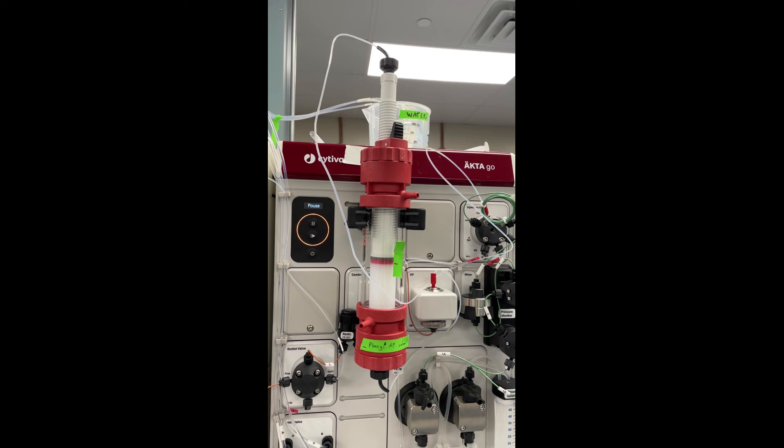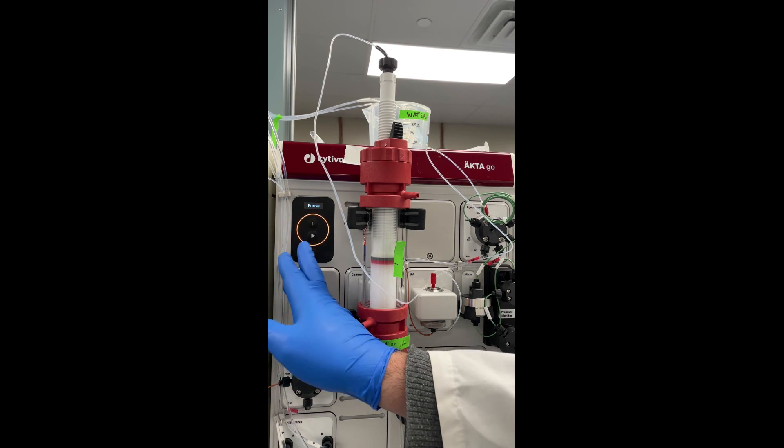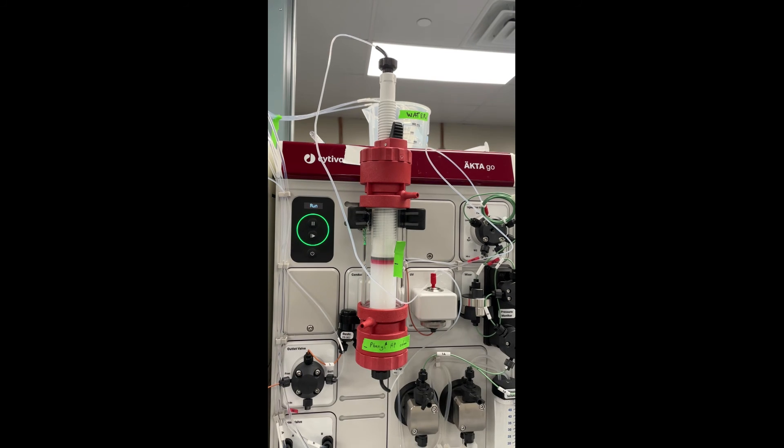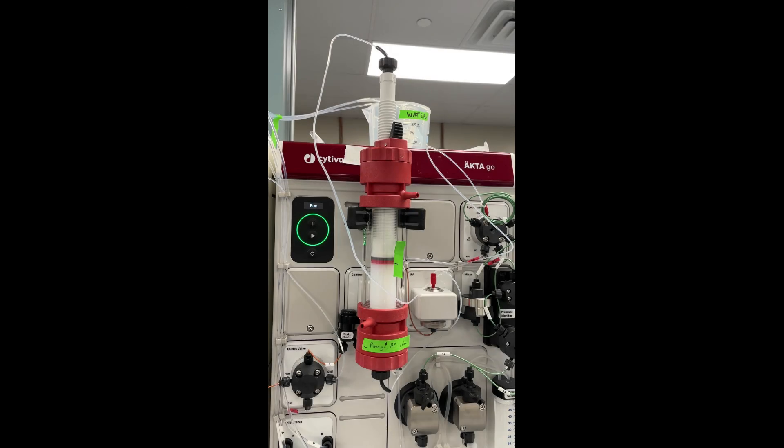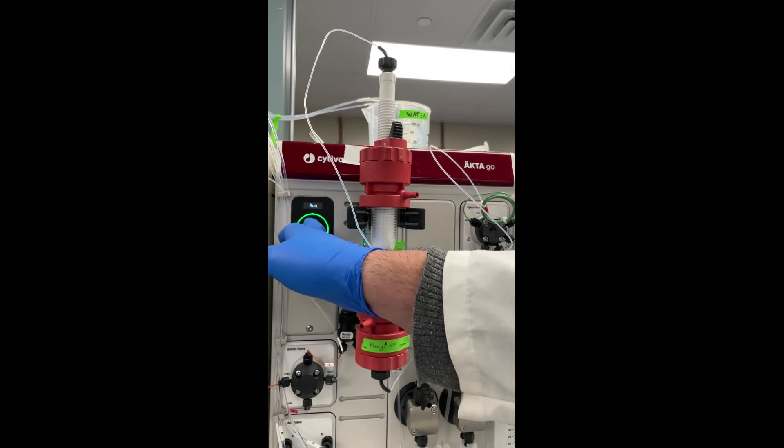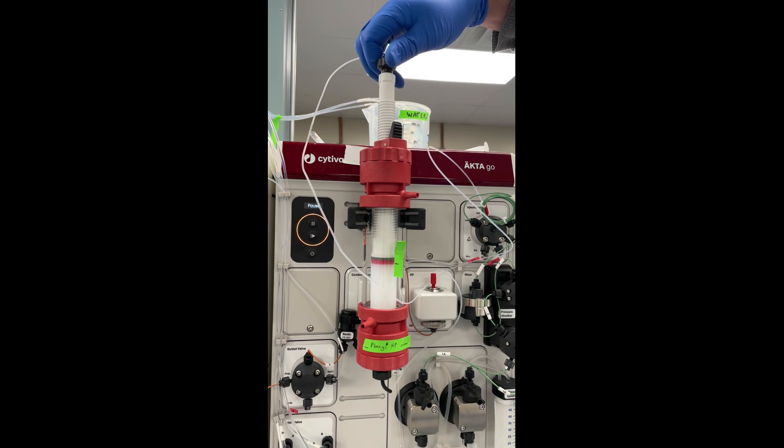I like to run the column at a slower flow rate than what I packed it. So I changed the flow rate to 6.8 mils per minute, about 75% of what I packed it. And then I pressed the play button on the system. I stared at the column for a couple minutes thinking that I wanted the adapter just a little bit lower than the mark.